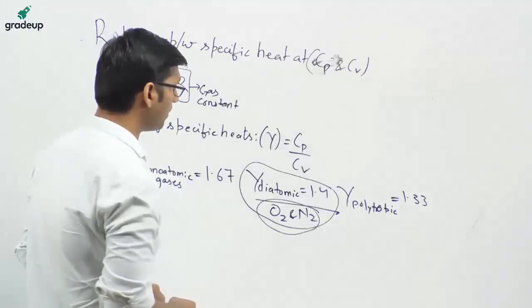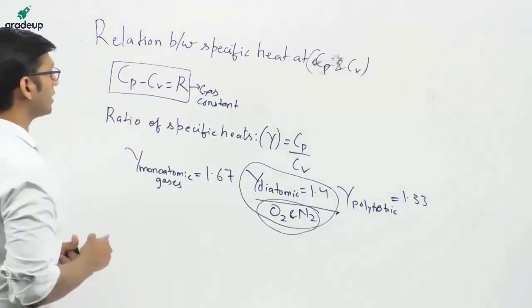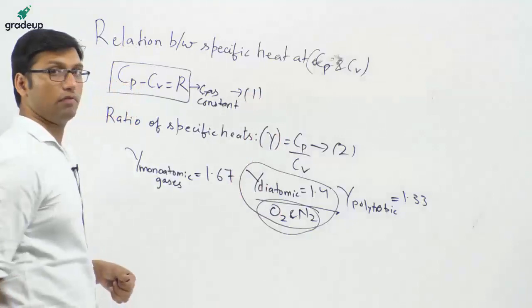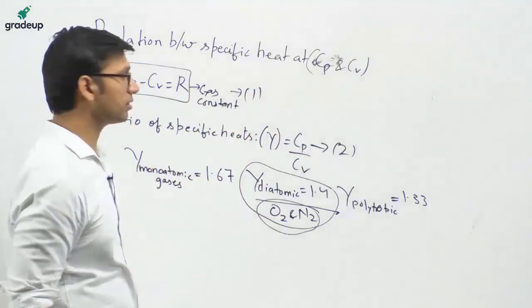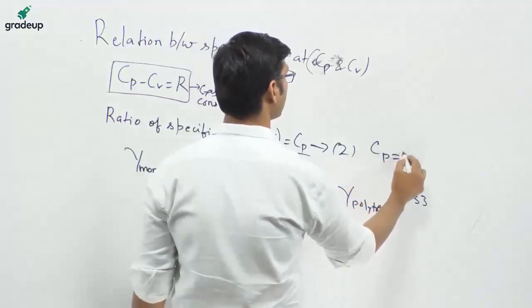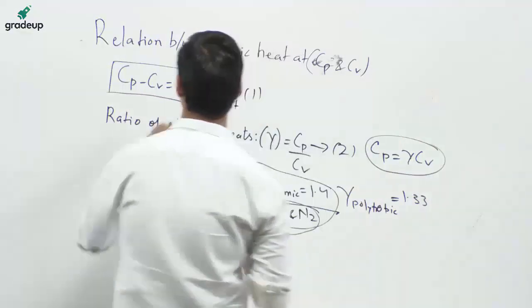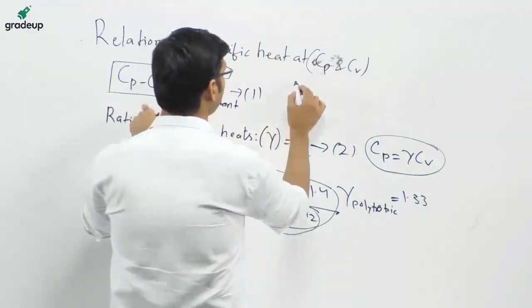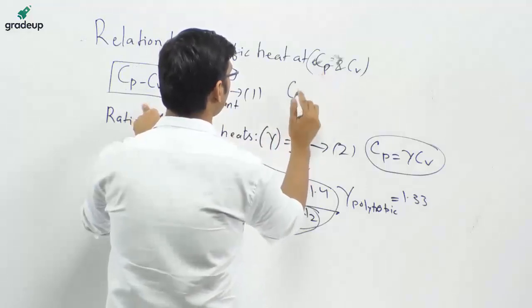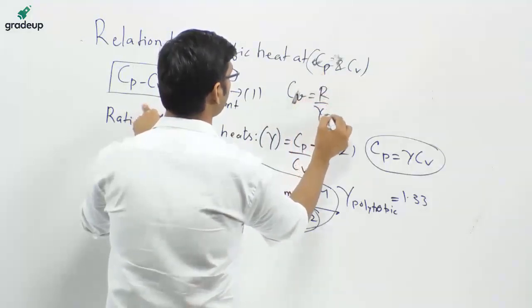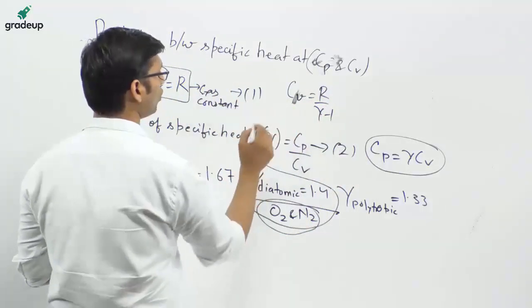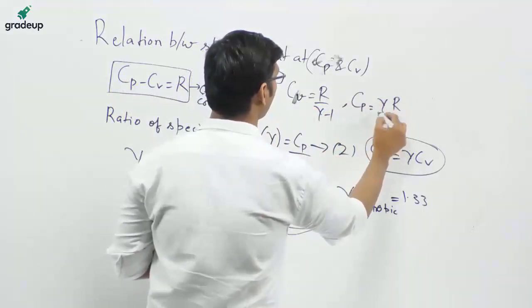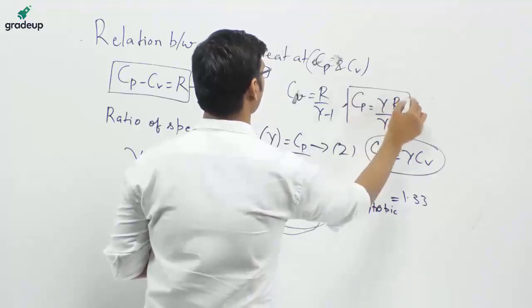The values of Cp and Cv have a relationship. If you combine the two equations — Cp = γCv and Cp = R + Cv — you will get Cv = R/(γ - 1) and Cp = γR/(γ - 1). These are very, very important relations.